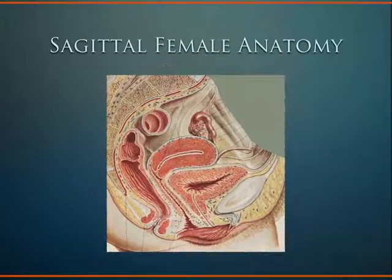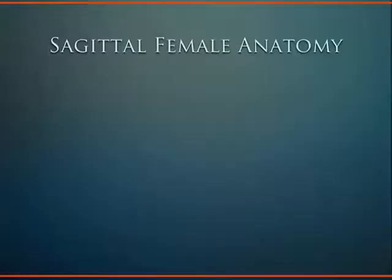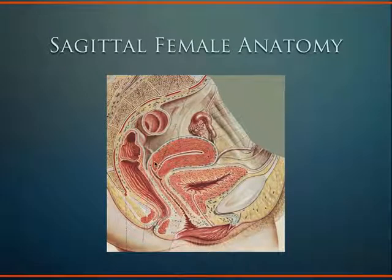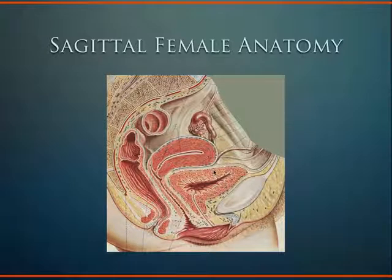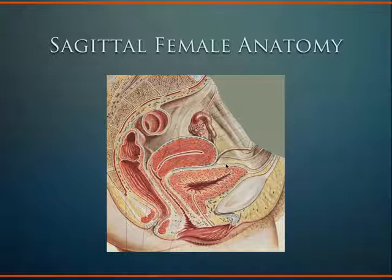Female sagittal anatomy is more complicated because of extra organs. With a relatively empty bladder, you see the vaginal vault and the anteverted uterus coming back up towards the bladder. The less full the bladder, the more anteversion you'll see. As the bladder fills, it pushes the fundus of the uterus posteriorly. The posterior cul-de-sac or pouch of Douglas and the anterior cul-de-sac or vesico-uterine pouch are locations where fluid can accumulate.